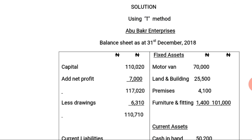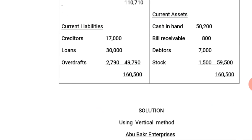Starting with the right-hand side, we have our assets. Under fixed assets, we list: motor van 70,000 Naira; land and building 25,500 Naira; premises 4,100 Naira; and furniture and fittings 1,400 Naira. The total of all fixed assets comes to 101,000 Naira.